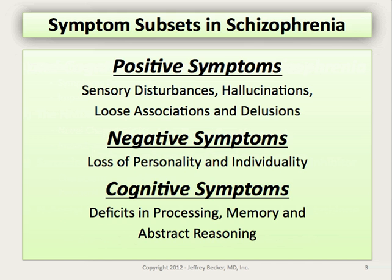It can be helpful to characterize the symptoms that the patient you're working with suffers from, so that treatment planning can occur appropriately. Positive symptoms are the common symptoms that people think of when they think of schizophrenia, and include sensory disturbances, hallucinations, auditory hallucinations, voices, loose associations in thinking, and delusions.